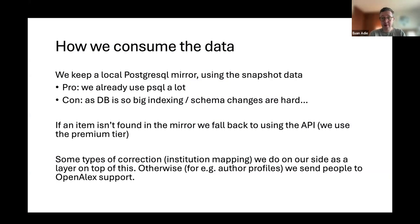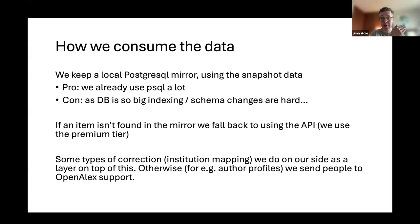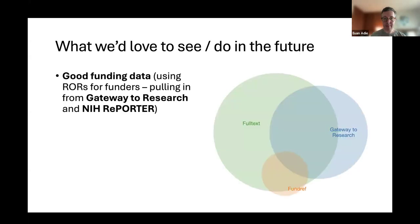In terms of how we consume the data: we have a local Postgres mirror using the snapshot data. We update that once every month or two. The pro is that we use Postgres a lot already, so it fits into our existing workflows. The downside is that because it's so big, it's really hard to add a new index unless we plan in advance. If there are any schema changes, we have to update the importer to account for them. It works for us because a lot of the papers are slightly older — it doesn't have to be up to the second. If something isn't in our mirror, we fall back to the API.